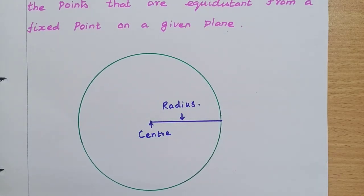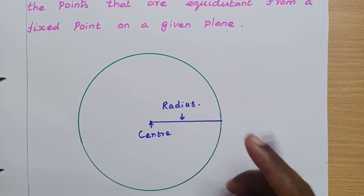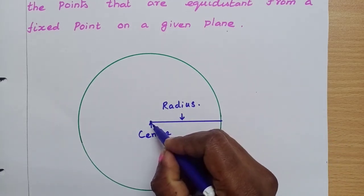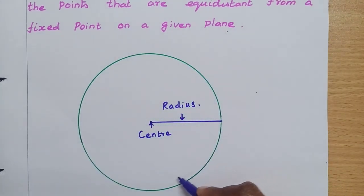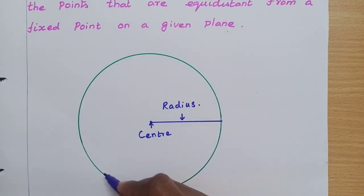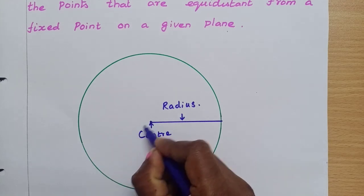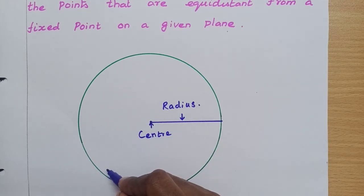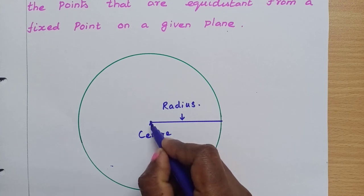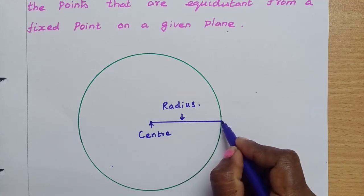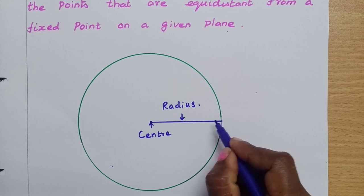So therefore, a circle is a collection of all the points that are equal distance from a fixed point. This fixed point is called the center point, and the distance between the center point and a point on the circle is called the radius.